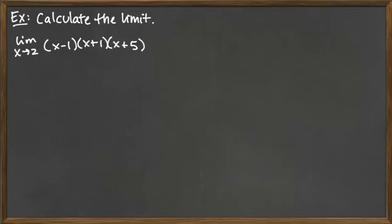In this example, we're going to algebraically calculate this limit. Now we're looking at the limit as x goes to 2 of this function that's a factored polynomial. Now the fact that it's factored doesn't change the fact that it's a polynomial.